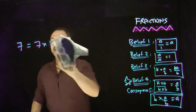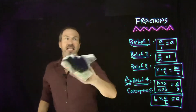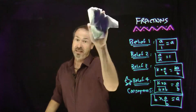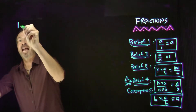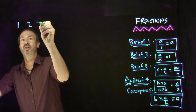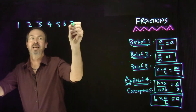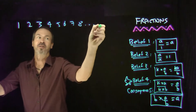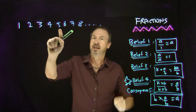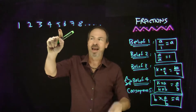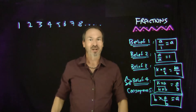Our story of numbers usually begins with the counting numbers — not the fractions, the counting numbers. The numbers that literally count things: 1, 2, 3, 4, 5, 6, 7, 8 and so on. For example, 7 days in a week, 5 fingers on a hand, 1 of me and so on.